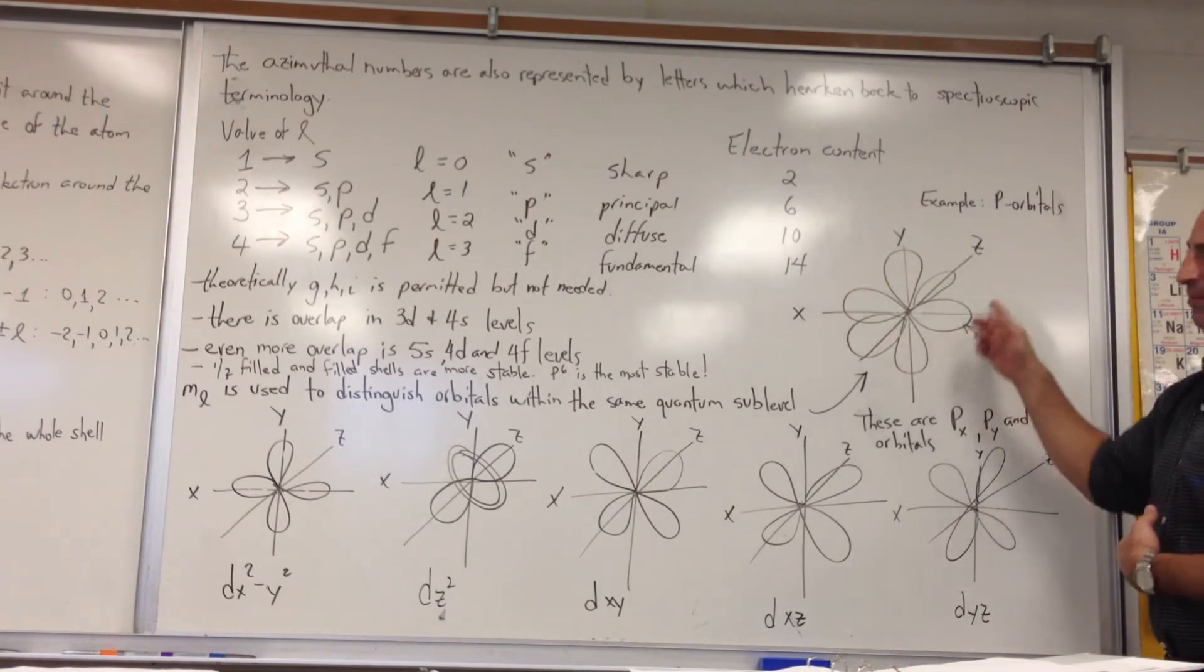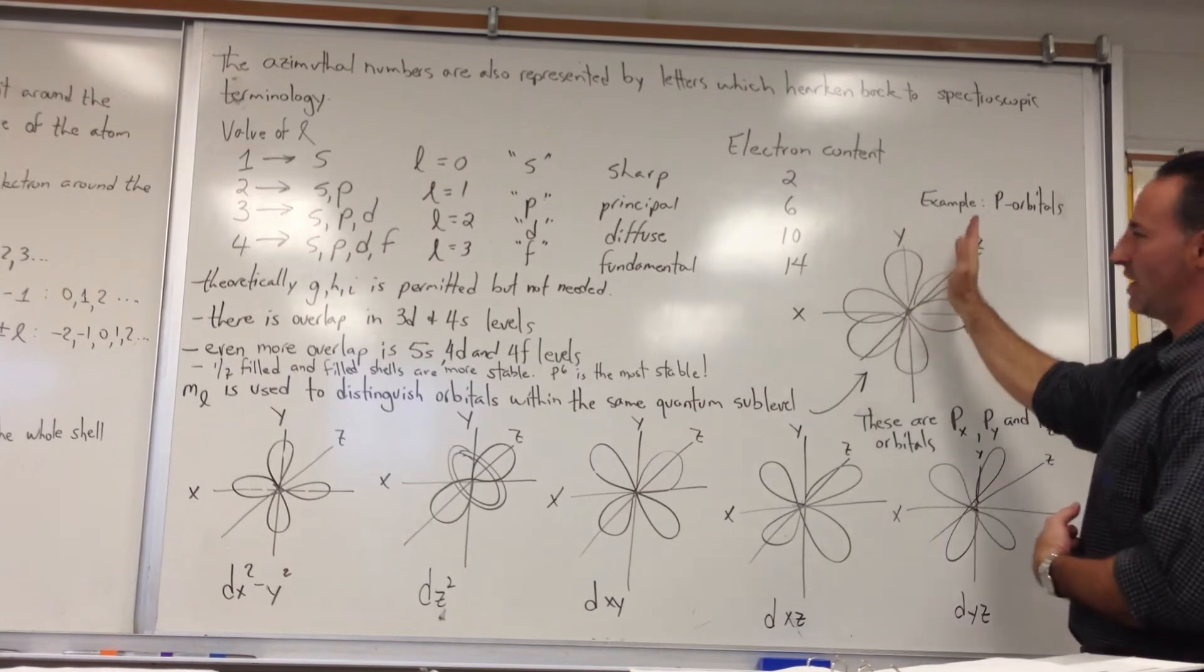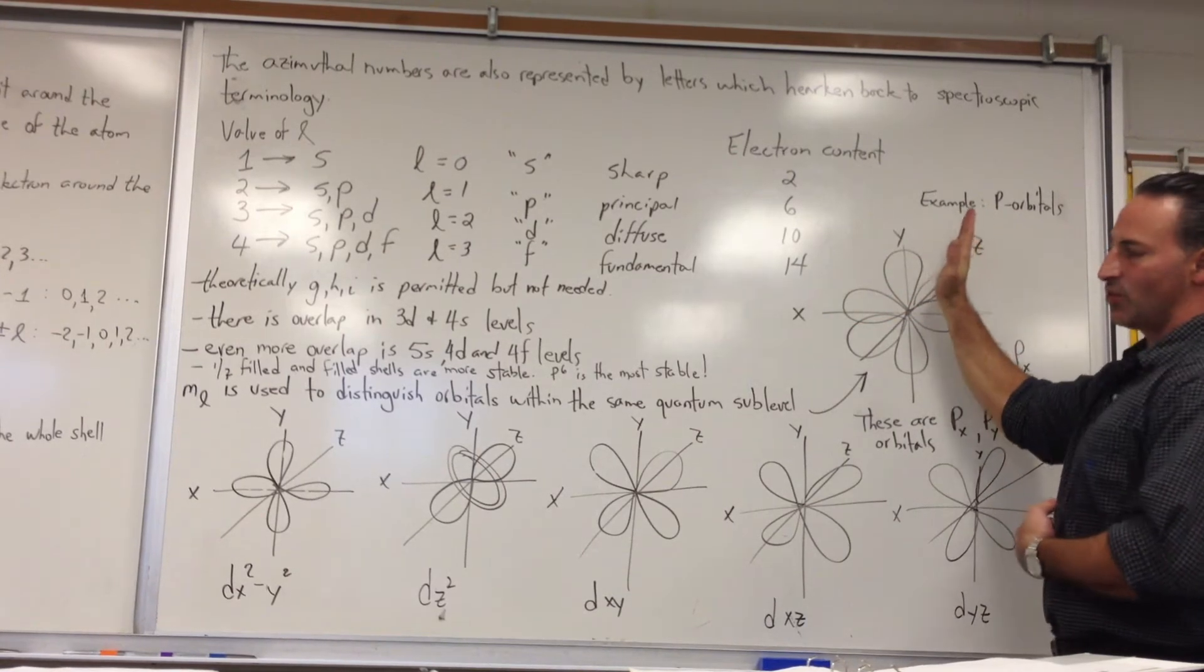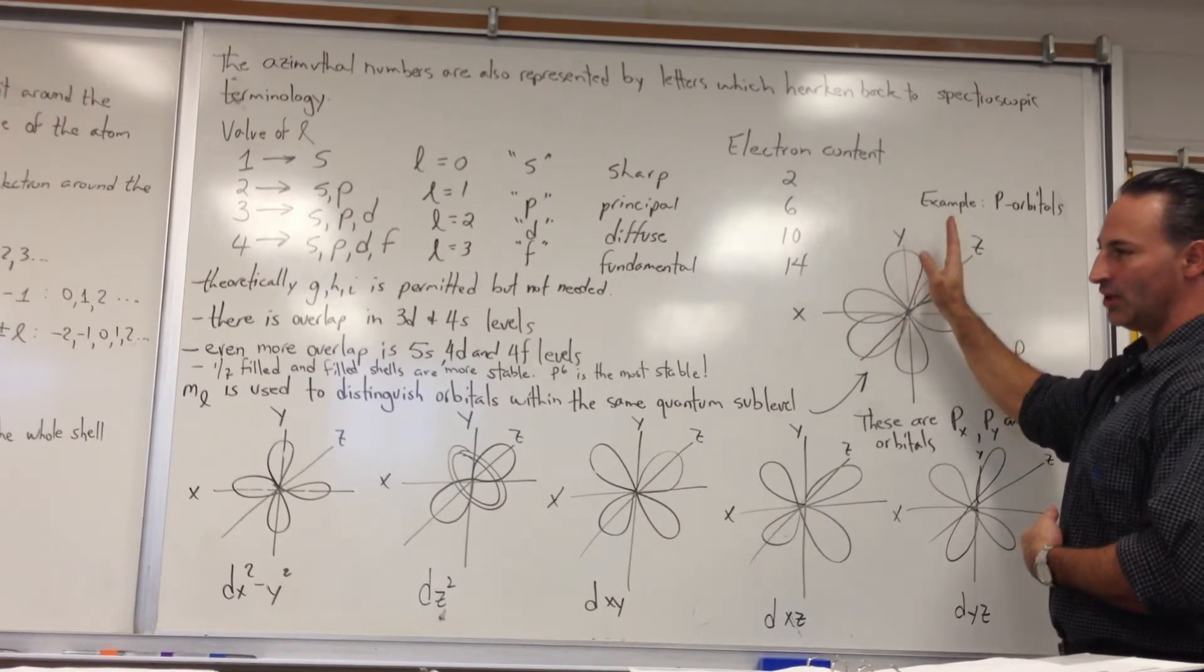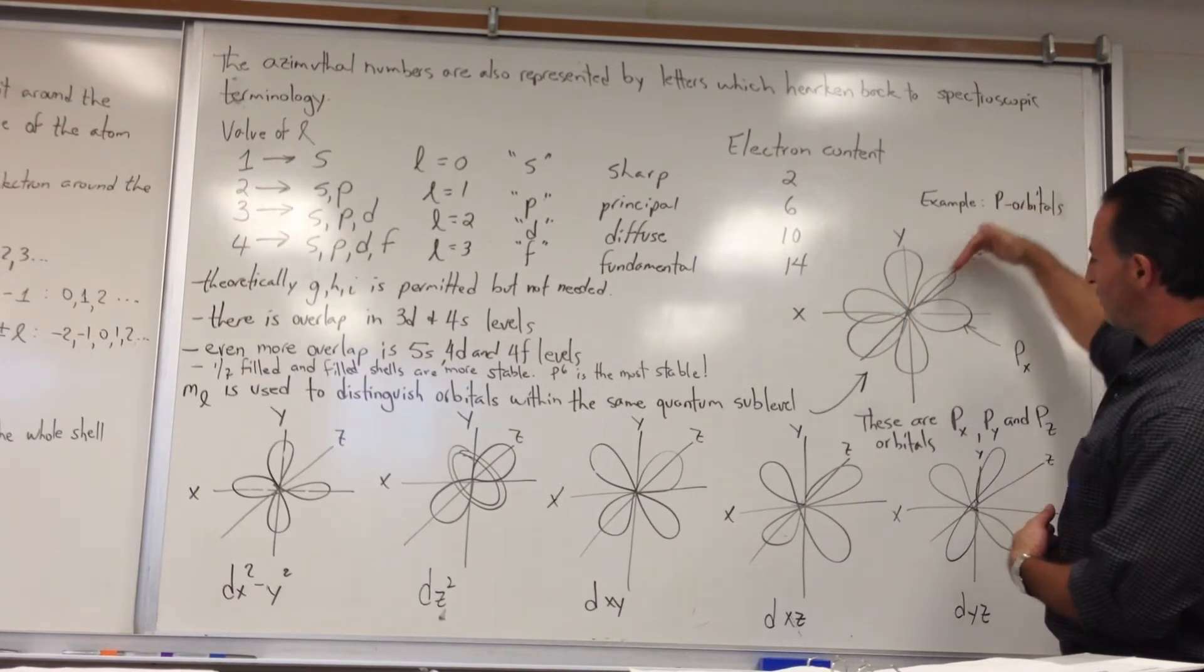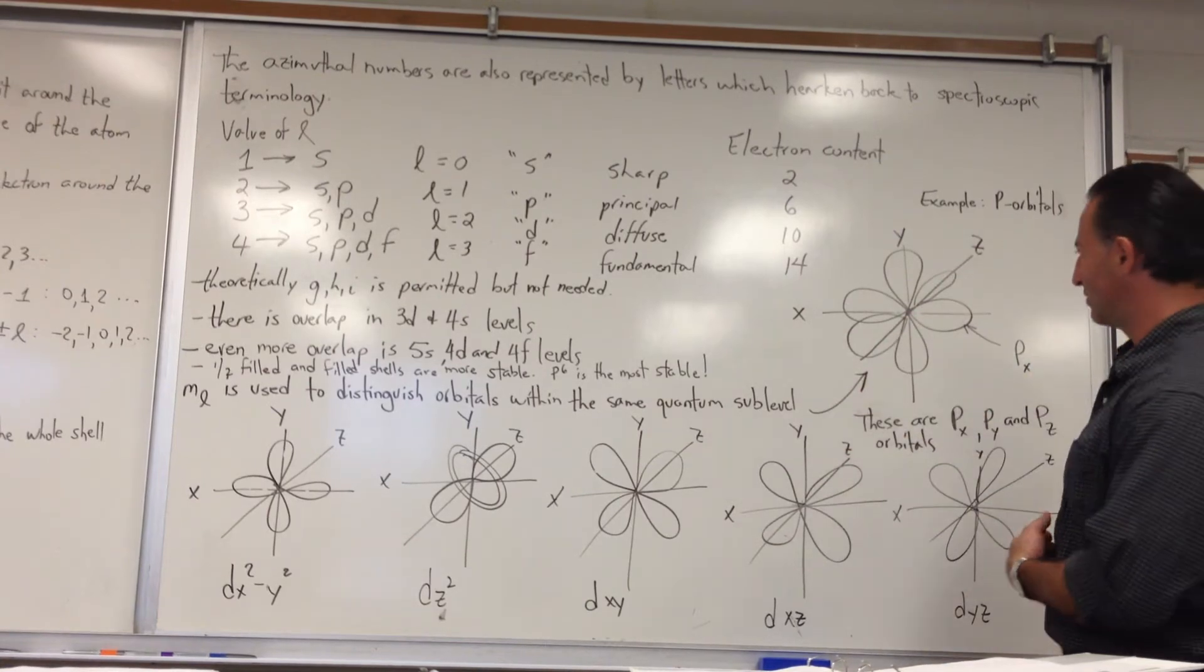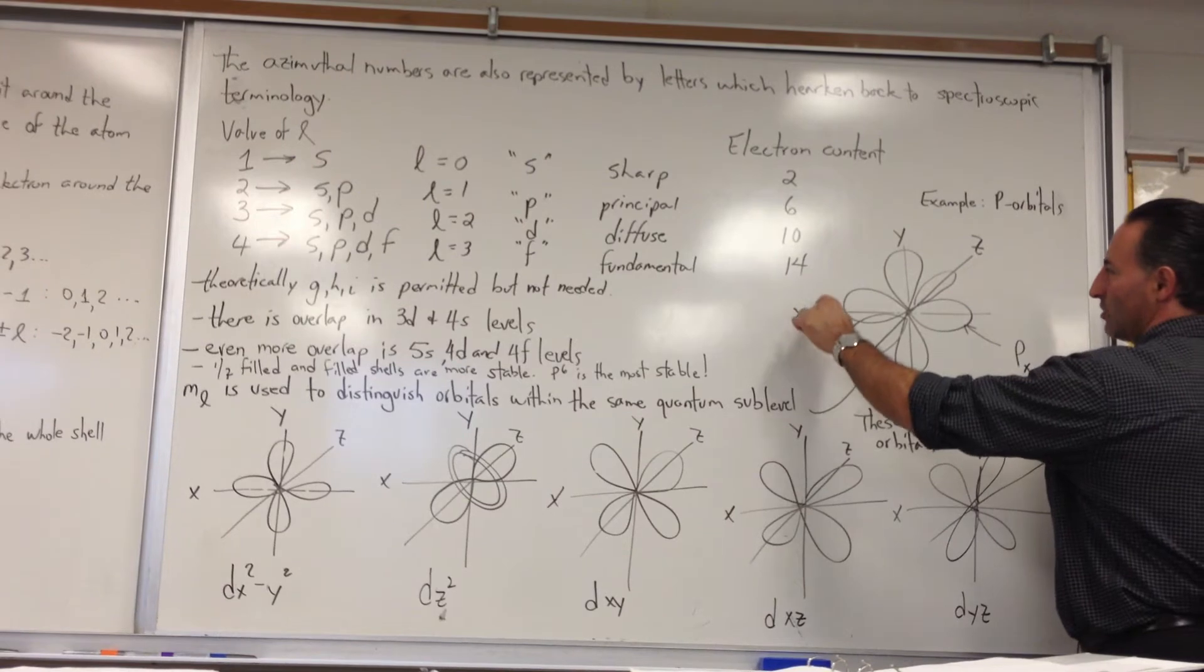The P orbitals are all lemniscates, arranged along the X, Y and Z axis. When you draw your XYZ axis, you draw your cross, that's the X and the Y, that's the normal Cartesian coordinate way of doing two-dimensional lines. But when you want to draw the Z, you just make it out of 45 to the Y and the X.